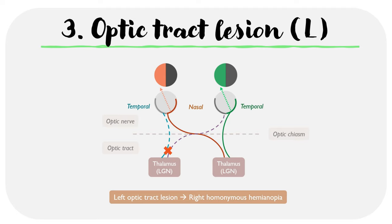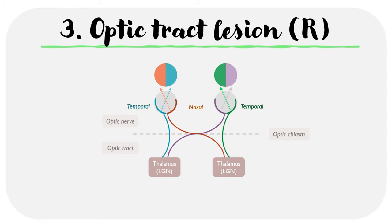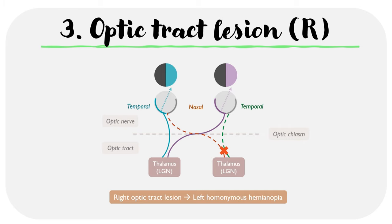In other words, we lose the right visual field in both eyes. Using the same process, a right optic tract lesion would lose the temporal retina in the right eye and therefore the right nasal visual field, and at the same time would lose the nasal retina in the left eye and subsequently the temporal visual field in the left eye. Overall, a right optic tract lesion leads to a left homonymous hemianopia.